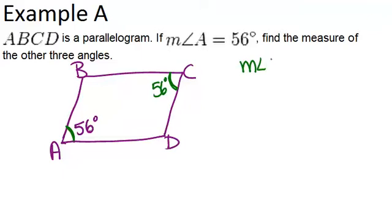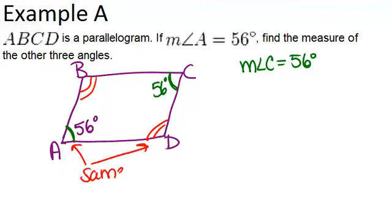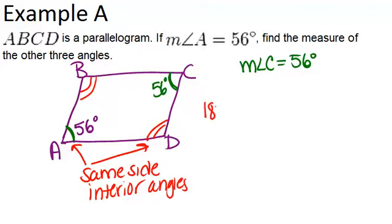So the measure of angle C also equals 56 degrees. Now to find the other two angles, we should remember that consecutive angles of a parallelogram are supplementary, and that's because they're really just same side interior angles. So because they're supplementary, that means they have to add to 180 degrees. So in order to find one of those angles, and therefore both of them, we can do 180 minus 56, and get 124 degrees.